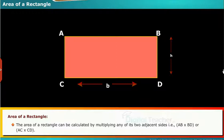The area of a rectangle can be calculated by multiplying any of its two adjacent sides. That is, AB into BD or AC into CD.